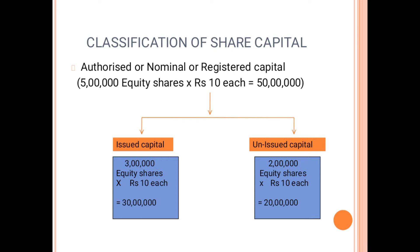The first term is Authorized Share Capital. Whenever a company starts issuing shares, first they have to mention the authorized or registered capital in the memorandum of association. We have already learned in 11th standard what is meant by the memorandum of association. It has different clauses, out of which one clause is most important — the capital clause. In that clause, the company has to mention how much amount is required for the business. That is called Authorized Capital, also called Registered Capital.